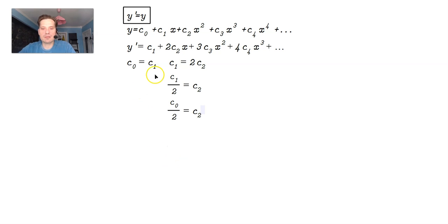So notice that now c sub 1 is expressed. It's just equal to c sub 0. c sub 2 is c sub 0 over 2, which really, remember, we can write as 2 times 1.